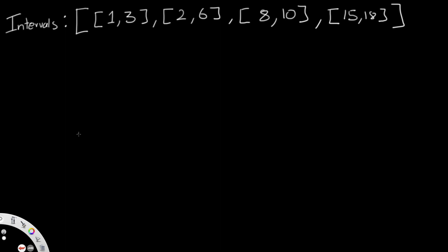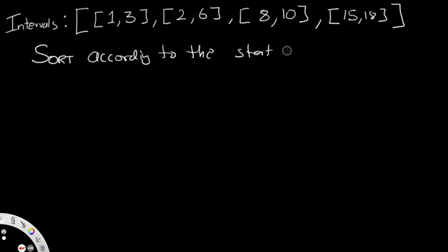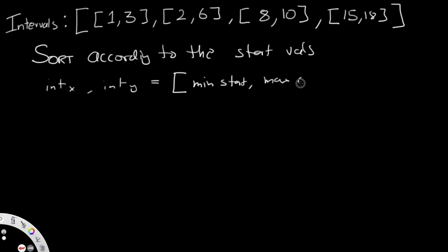So we have one and three, and two and six. Before we do anything, our first step is to sort the values — specifically according to the start values. Why do we sort this way? When merging two intervals X and Y, we choose the minimum start coordinate and the maximum ending coordinate. Once we sort by start values, we only need to worry about the ending condition, because we already know the start values go from low to high — so we don't have to worry about that part.